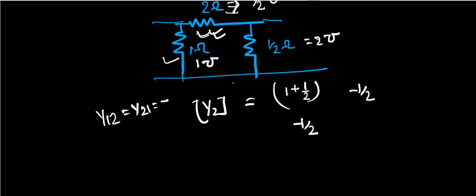This element is minus 1 by 2. What will be the Y22 component? That is the sum of these two. So you can easily say that it will be 2 mho plus 1 by 2 mho. This is my Y parameter.